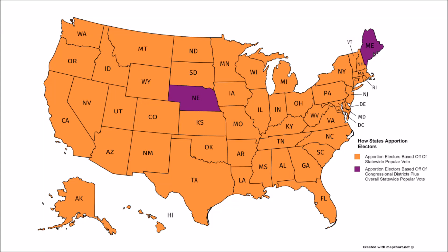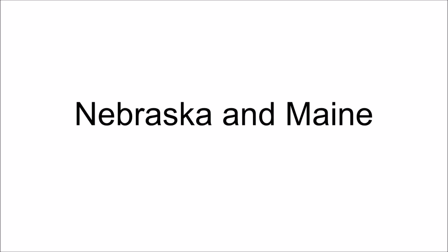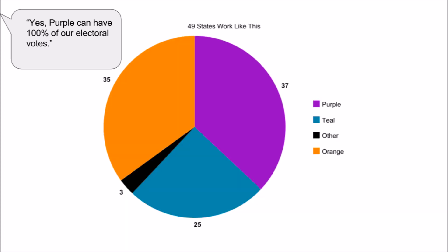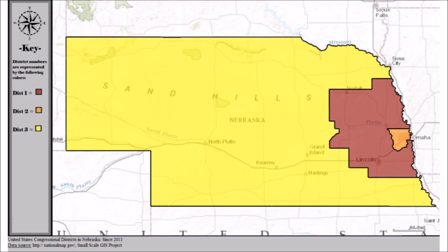49 out of 51 contests in the electoral college use plurality vote and winner-take-all on a statewide basis. The two states that don't do this are Nebraska and Maine. To be clear, Nebraska and Maine also use plurality vote and winner-take-all, but on a smaller scale. Each of the other 49 contests gives all of its electoral votes to whichever candidate carries the majority or plurality of that state's popular votes.